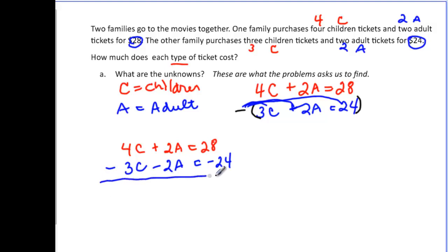And now I'm ready to add my two equations. And when I add my two equations, I get 4C minus 3C, so that's just 1C. My A's cancel out, and we're left with 28 minus 24, which is 4. So now we know C, and we just have to find A.